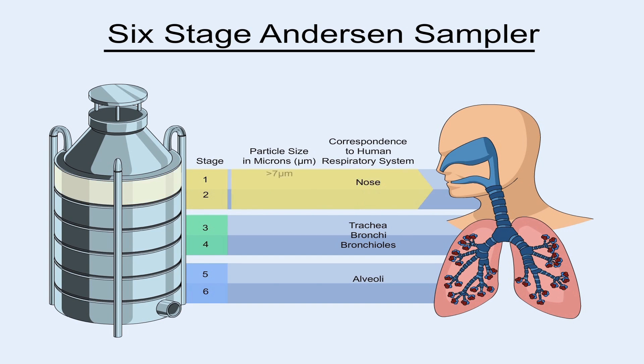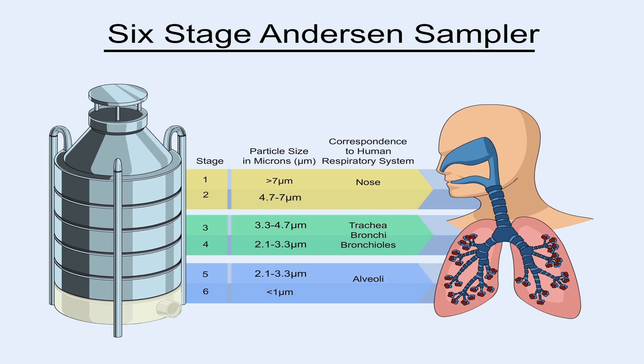For instance, the larger size particles are seven microns and above. The second category would be in the range of four to seven microns. And the last category will be the smallest particles — we're talking about half a micron to about 1.1 microns. The theory behind the Anderson sampler has been based primarily on what we know about the respiratory system for sizing the air particulate that we breathe in.